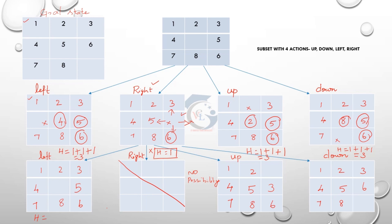Now here: 2, 3 correct; 4 correct. Blank space — consider. 5 and the mismatch: heuristic value 1 plus 7 correct, 8 correct. 6 is present; blank space is above. So heuristic value equals 1 plus 1 = 2. We solve this: 1 correct, 2 correct. Here is empty space. Consider 4, 5 is correct. Here is 3, here is 6, here is 7, 8, and 6 — heuristic value 1 plus 1 is 2. Here is down.